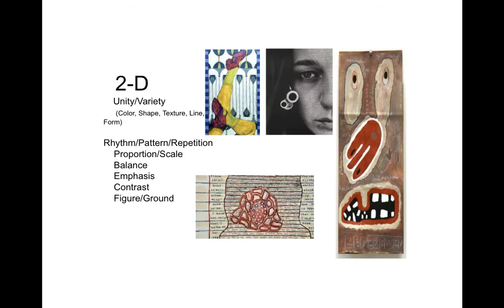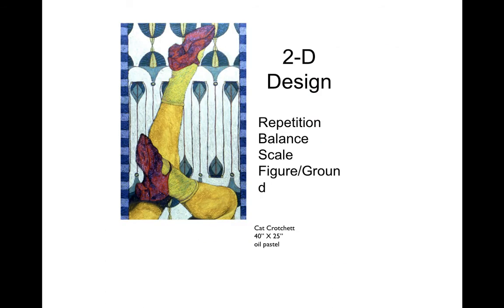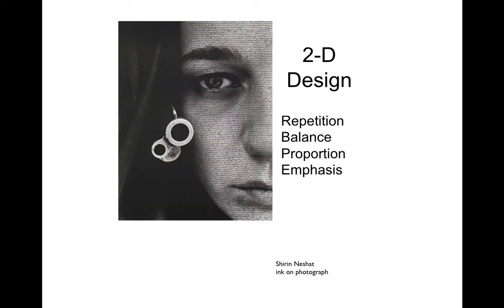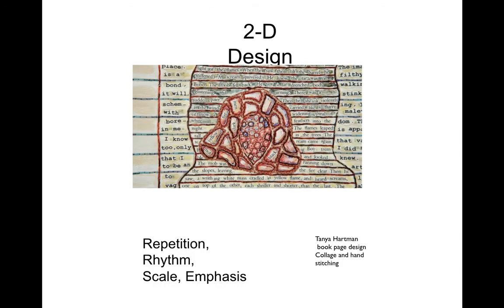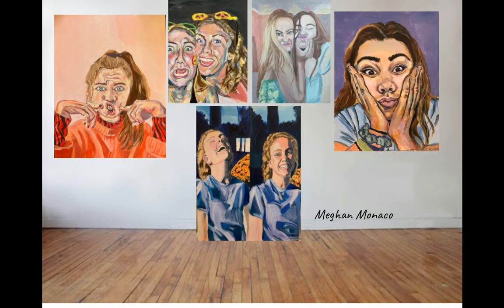In 2D Design, it deals more with unity and variety, rhythm, pattern, repetition, proportion, balance, emphasis, contrast, and figure-ground. This leans toward the principles of design, whereas the drawing portfolio focuses more on the elements of design. These are just a few examples of different approaches toward something considered 2D design — not necessarily what we'd create right off the bat, but something someone might develop into a page design or collage. These are former student works from last year, just to give you an idea of the capabilities and what I strive for students to achieve.